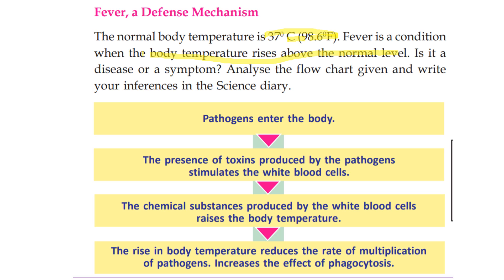When pathogens enter the body, the toxins produced by the pathogens stimulate the white blood cells. The chemical substances produced by white blood cells then raise the body temperature. The rise in body temperature reduces the rate of multiplication of the pathogen.